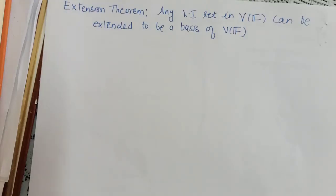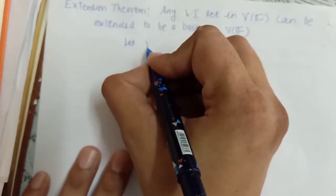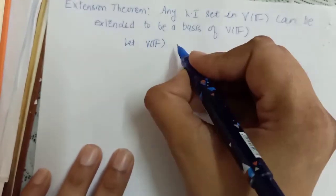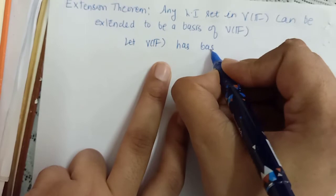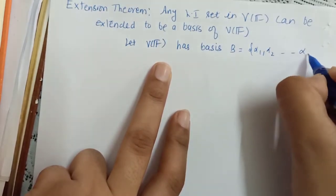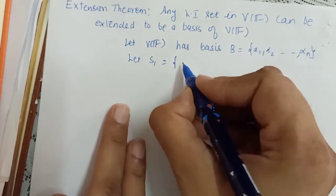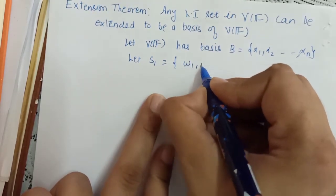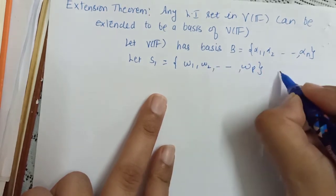The next theorem is the Extension Theorem, which states that any linearly independent set in a vector space can be extended to be a basis of that vector space. Suppose V over F is an n-dimensional vector space with basis α₁, α₂, up to αₙ, and let S₁ be a linearly independent set with elements w₁, w₂, up to wₚ.